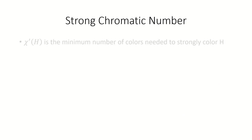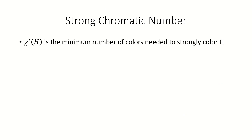We define the strong chromatic number of a hypergraph to be the minimum number of colors required for a strong coloring of the hypergraph. Since all strong colorings are proper colorings, it must be that the strong chromatic number of a hypergraph is greater than or equal to the chromatic number of that hypergraph.